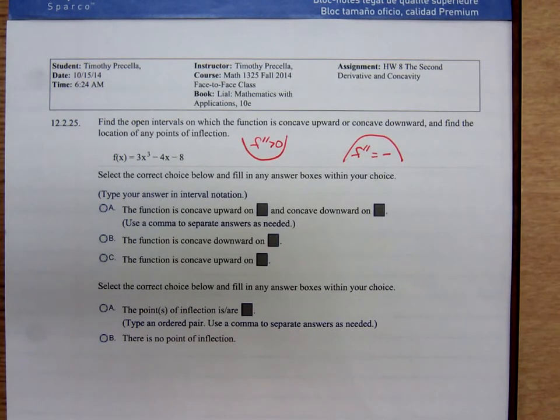In this case, we're using the second derivative to determine concavity. We want to find the intervals on which the function is concave upward or concave downward, and find the location of all points of inflection.